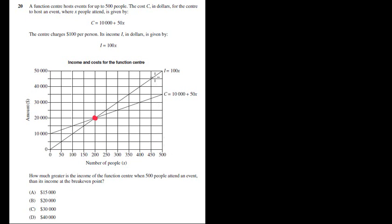Well, quickly, 500 people is going to be 50,000 dollars. So it wants the difference, or how much greater is the income for 500 people as opposed to the break-even point. Well, the break-even point is that point there we spoke about, solving simultaneously where they both intersect. That point is 20,000. So if we subtract those from each other, we get an answer, or a difference, of $30,000. So in that case, it's going to be C as the answer.